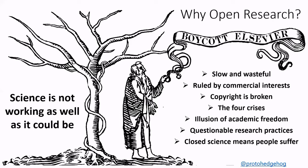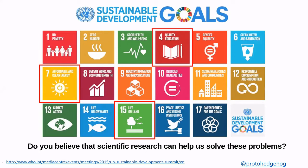One consequence is a proliferation of questionable research practices such as doctoring data, manipulating images, p-hacking or HARKing. The result in the bigger picture is that this closed way of doing things means that people suffer. If you put this in a wider global context and look at the UN sustainable development goals, there are key issues around affordable and clean energy, solving the hunger crisis, taking action against climate change and biodiversity crises, and giving people quality education.